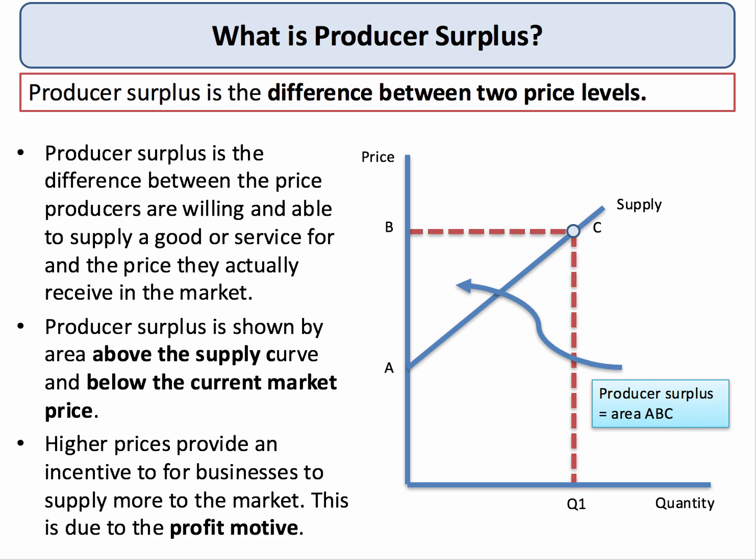High prices for businesses are an incentive to supply more to the market. We call this the profit motive — producers driven by the opportunity of increasing their producer surplus. In our diagram on the right-hand side, the market price increases from A, which is the minimum price that firms will supply at. If the price increases from A to B, the producer will be willing to supply quantity Q1. The price they get is B, and the area of producer surplus — above the supply curve and below the market price — equals area A, B, C.